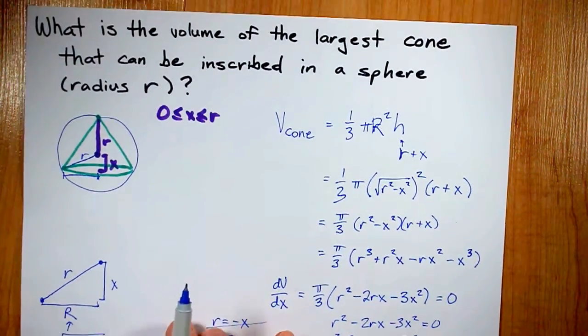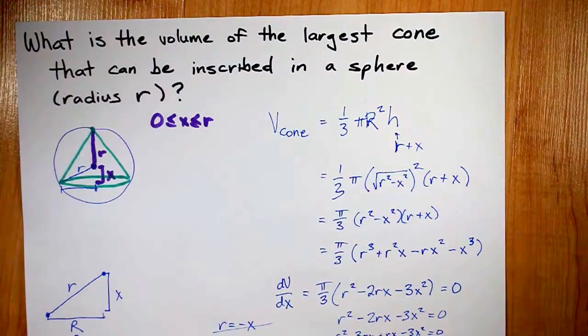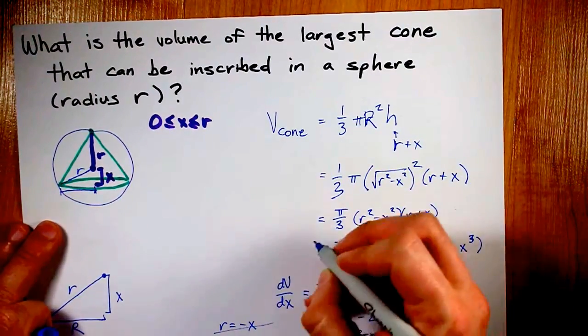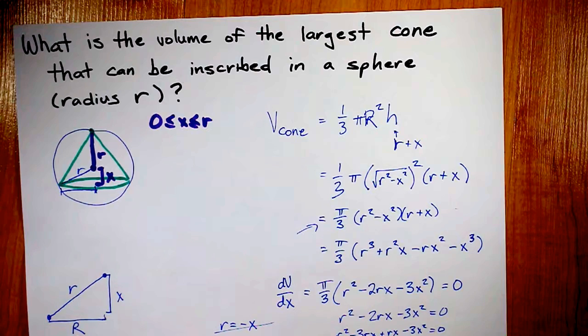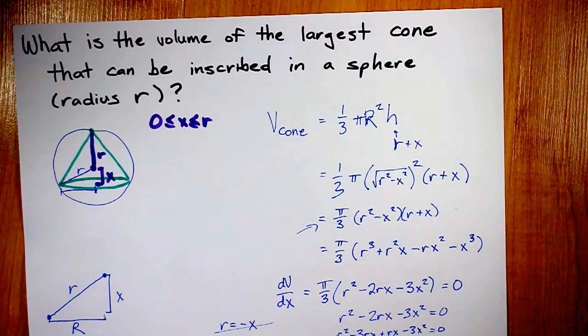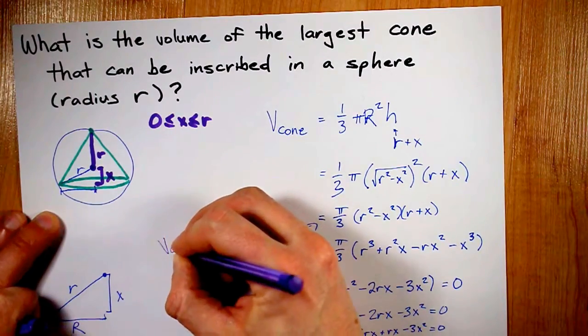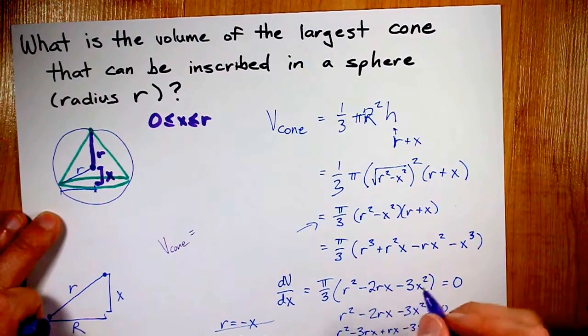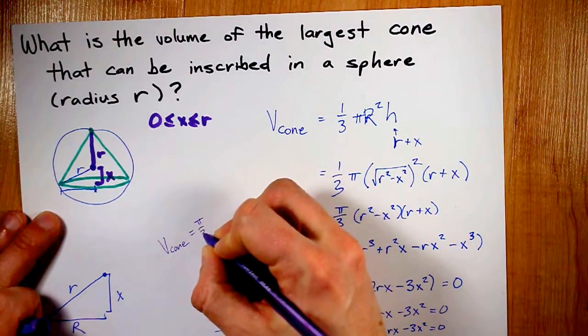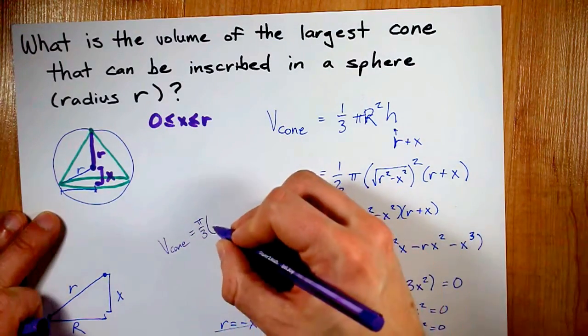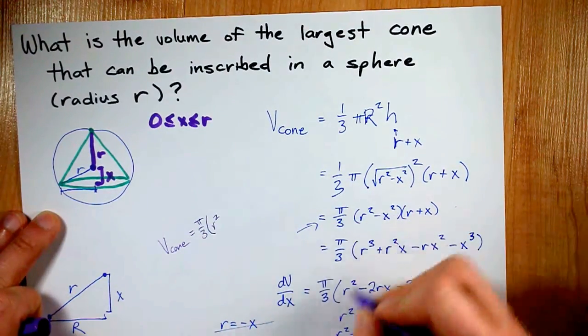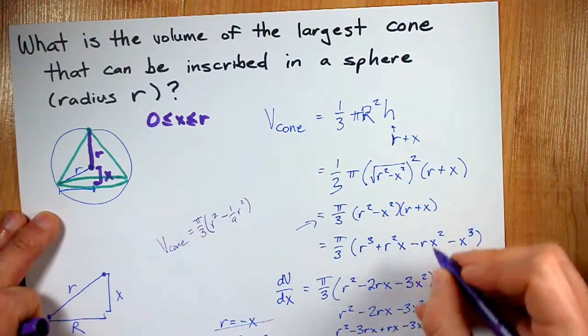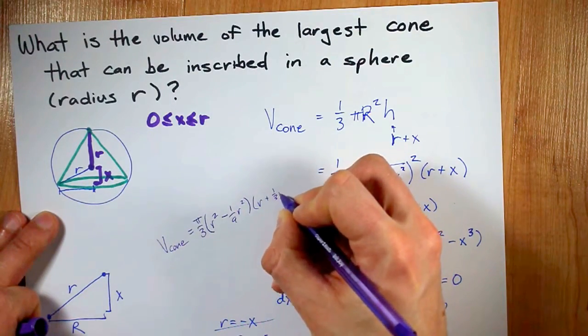Now, the only other thing is that the question originally asked what the volume of the largest cone was. So, I should take that and plug it back into the original function. This one looked best for me. I'm going to bring out a different color here. Let's use purple. So, the volume of the cone that maximizes its own volume inscribed inside a sphere is pi over 3 times r squared, I'm going to keep, minus x squared. Minus this squared is going to be minus a ninth r squared. And then over here, I have r plus a third of r.